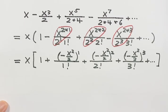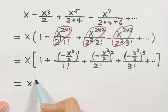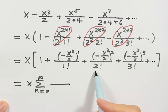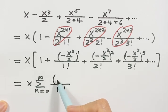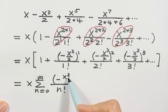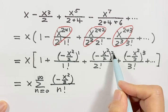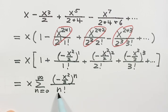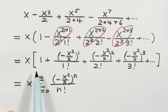So now we can put them into a summing notation: sum n from 0 to infinity. The bottom is just n factorial, and on top it's just negative x squared over 2 to the power n. When n is 0, 0 factorial is 1 and the power 0 is 1, so that gives the first term.